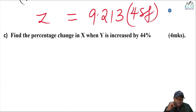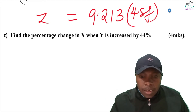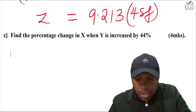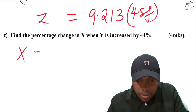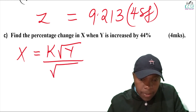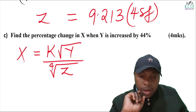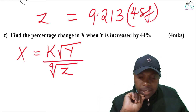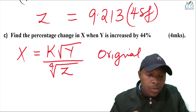Let's go to the third part of the question: find the percentage change in x when y is increased by 44%. We go back to the original equation connecting x, y and z — without the constant k — which is x proportional to the square root of y divided by the fourth root of z. We use this original equation to work out the percentage change in x.